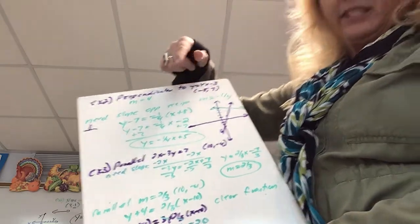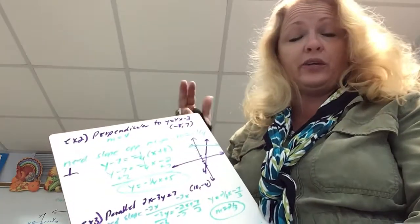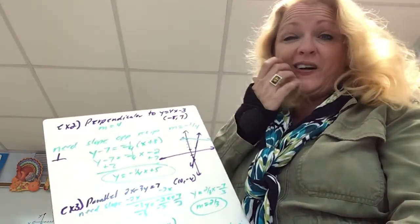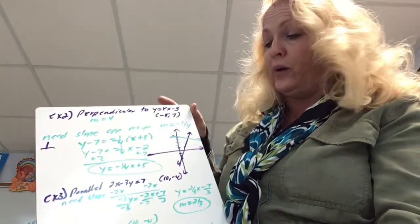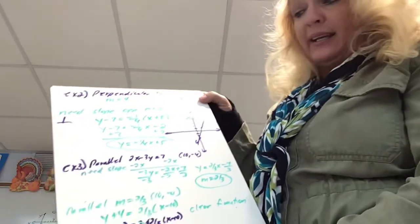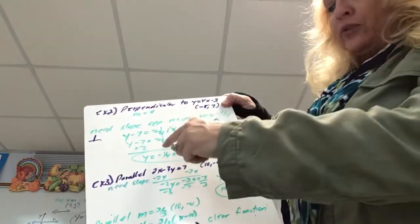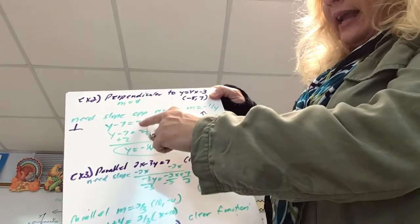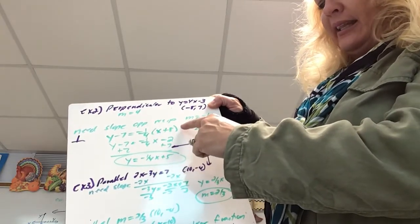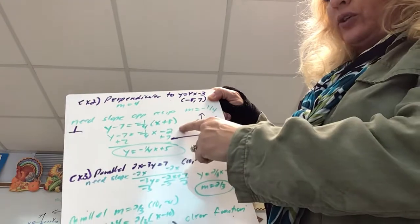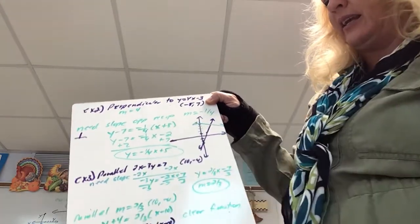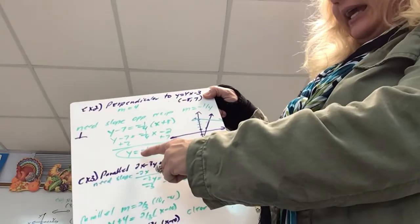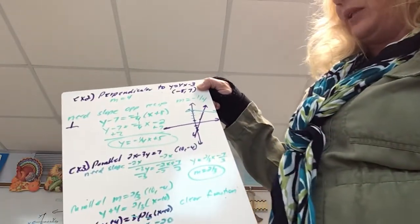You have two options: clear your fraction, or if distributing is going to reduce nicely, you may not need to — you can just distribute. If I distribute negative one-fourth, I get negative one-fourth x. Negative one-fourth times 8 is like 8 divided by 4 equals 2, and negative times positive is negative. Adding 7 gives us y equals negative one-fourth x plus 5.